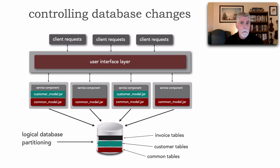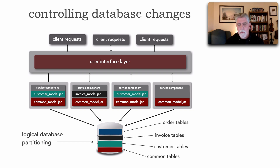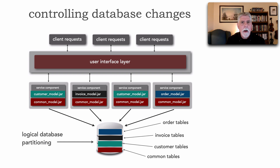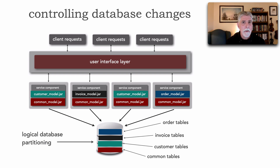We continue partitioning further and say we've got a group of invoicing tables — and notice it's only the second service component, which is obviously our invoicing service, that needs those. That representation of those tables, those entities, gets packaged up accordingly. What I typically do is try to logically partition my data into domains that are fine-grained enough to get these one-to-one correspondences, but not so fine-grained that I'm stretching them across multiple services. The advantage of this technique is I've got all these domain-based entity libraries — JARs or DLLs — that help me control change.